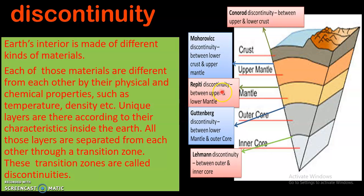The third is Repetti discontinuity. Repetti discontinuity divides or separates the upper mantle and lower mantle into two different mantles. In simple terms, it is a boundary which divides the upper mantle and lower mantle.